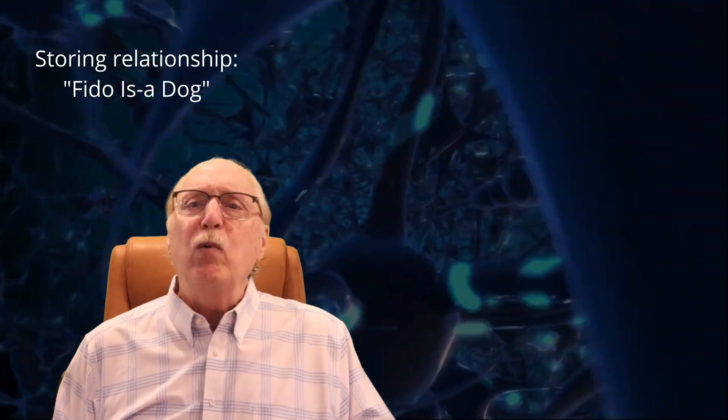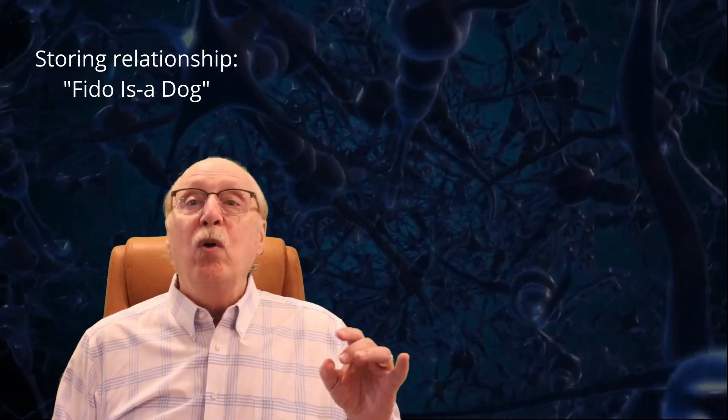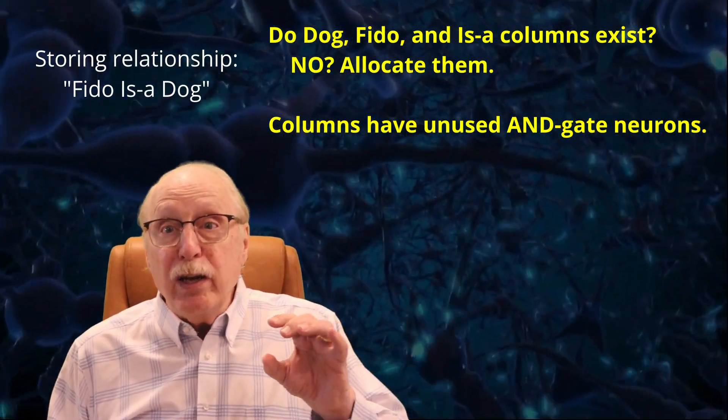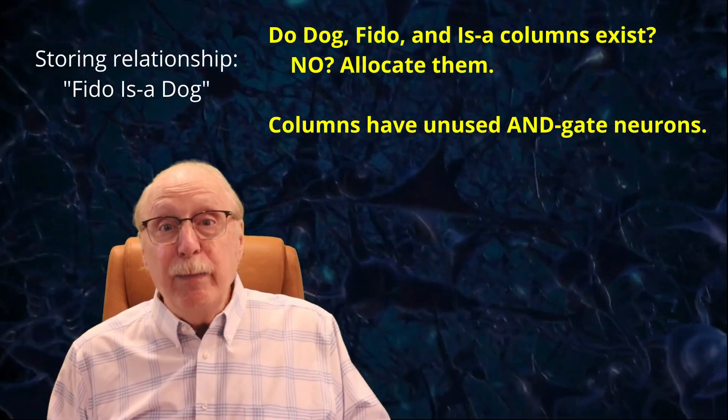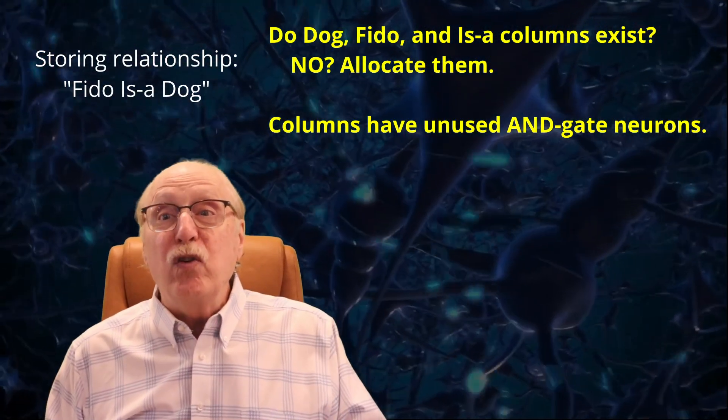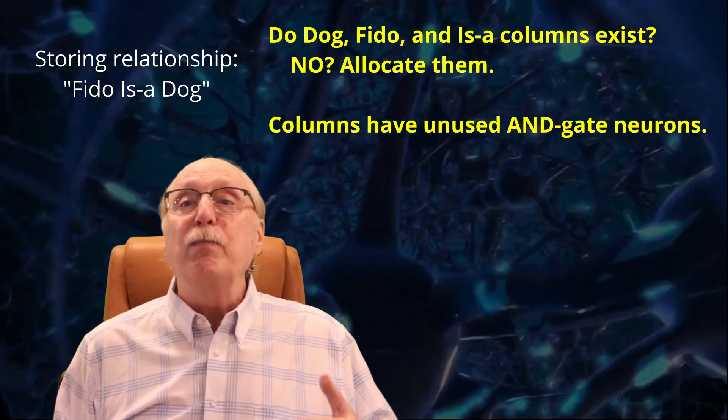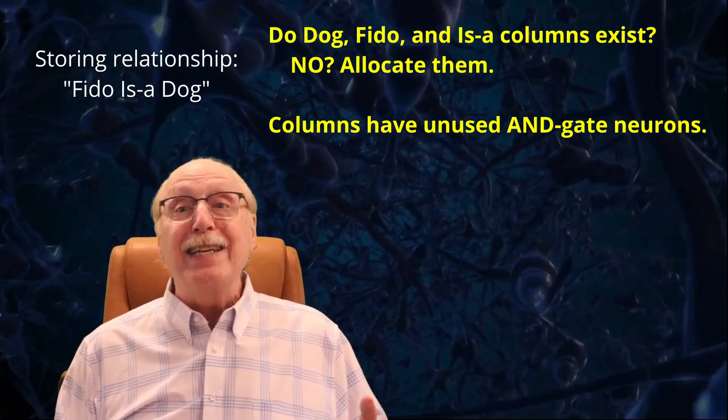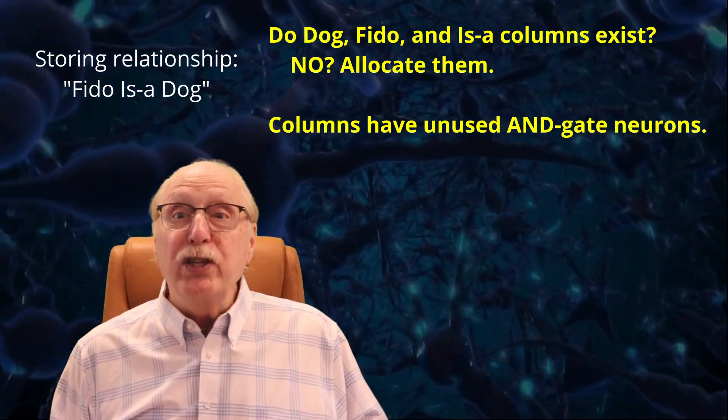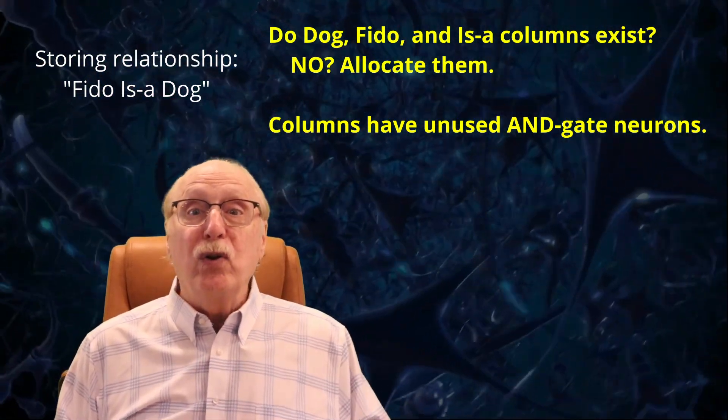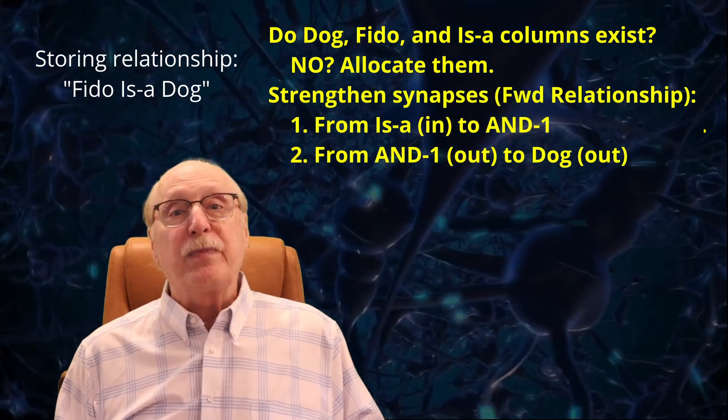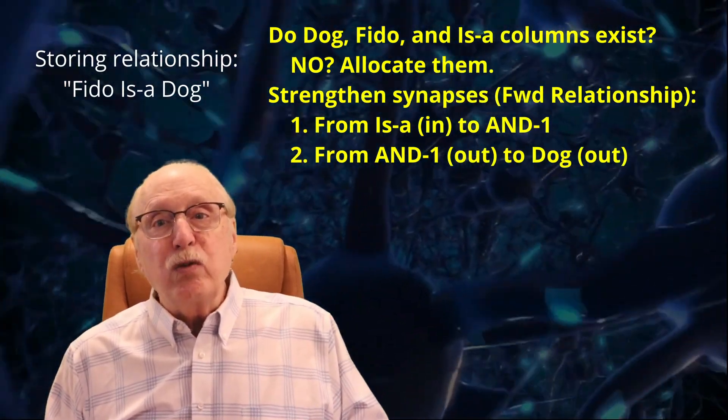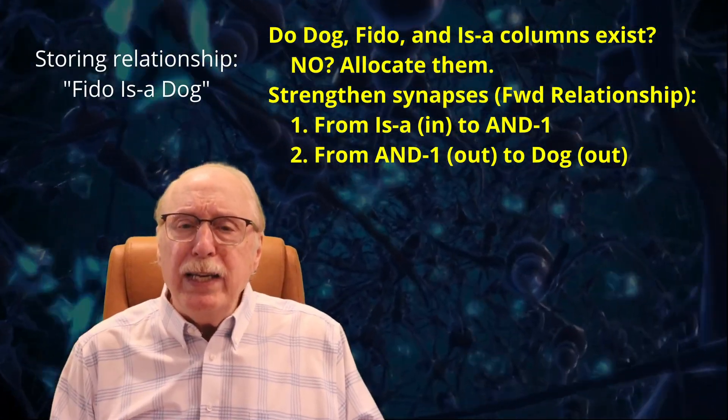So how would this actually work in the brain? Let's say we want to store the fact that FIDO is a DOG. We need to allocate a new, or locate an already defined, column for FIDO, DOG, and ISA. These columns each include an IN neuron and an OUT neuron, plus a pool of pre-wired neurons acting as AND gates, used to represent relationships, and the supporting neurons which can fire the necessary spike bursts to implement the Hebbian learning.